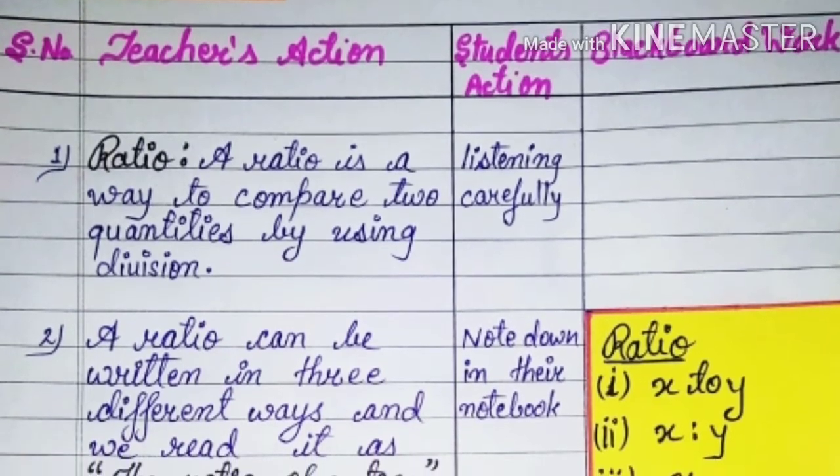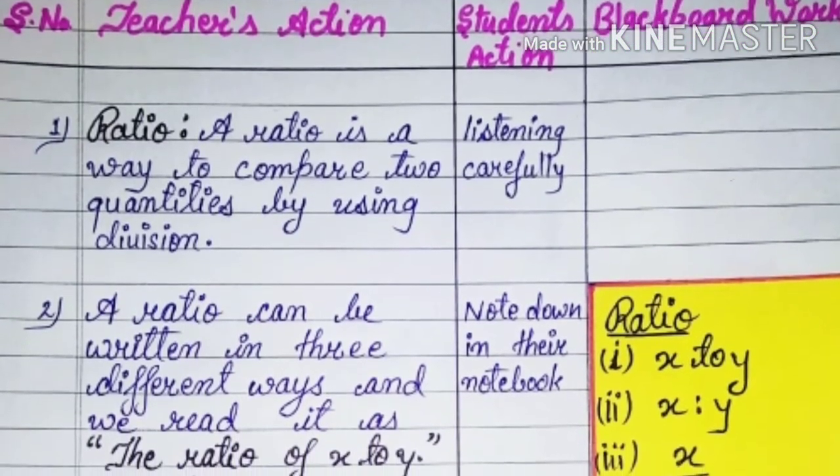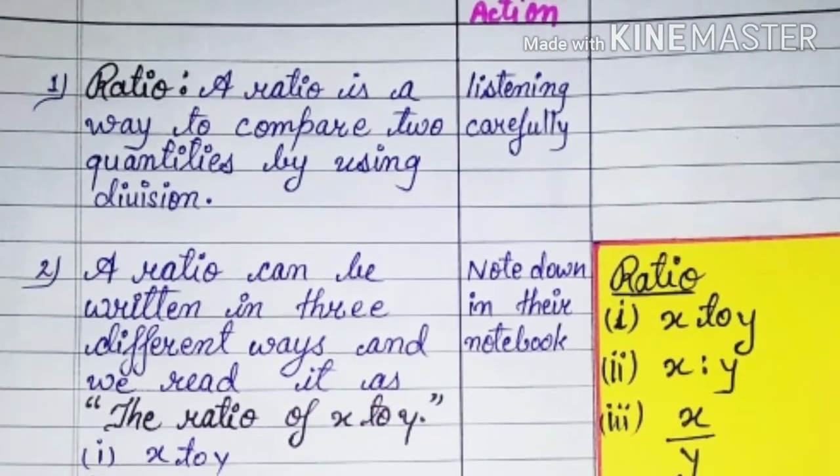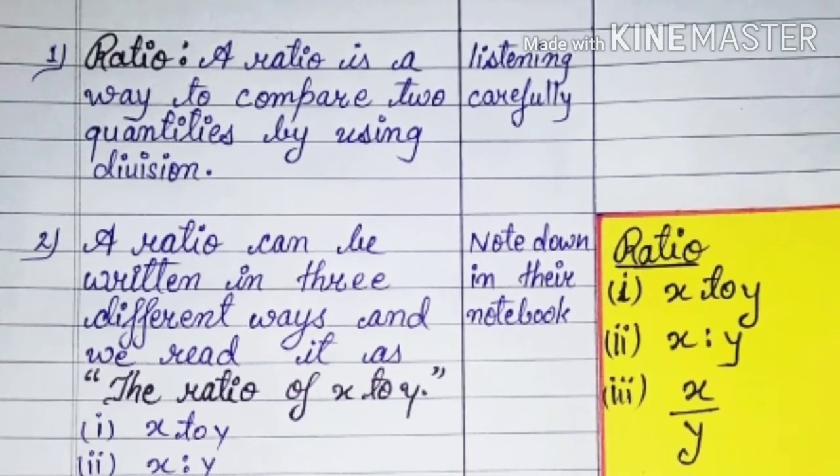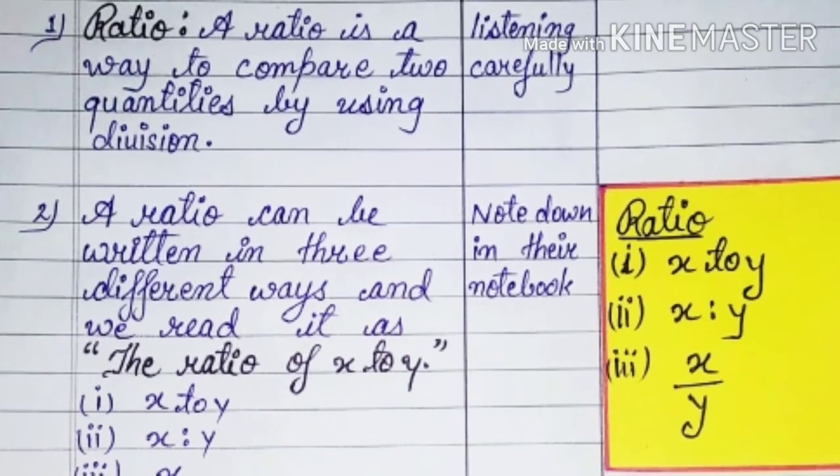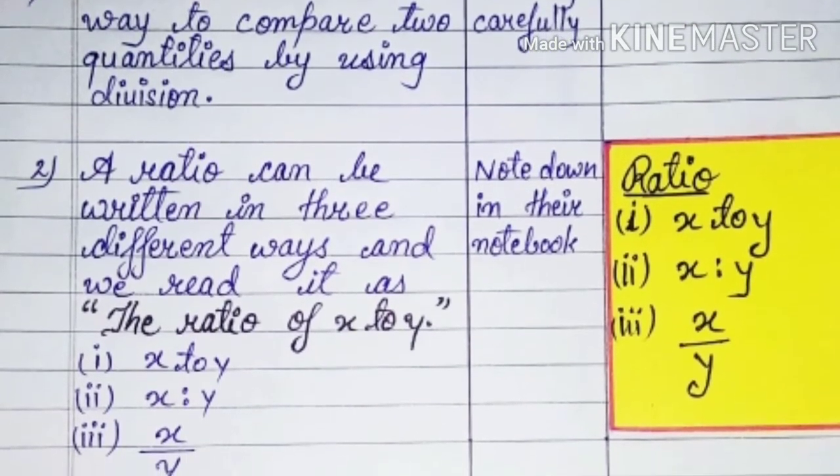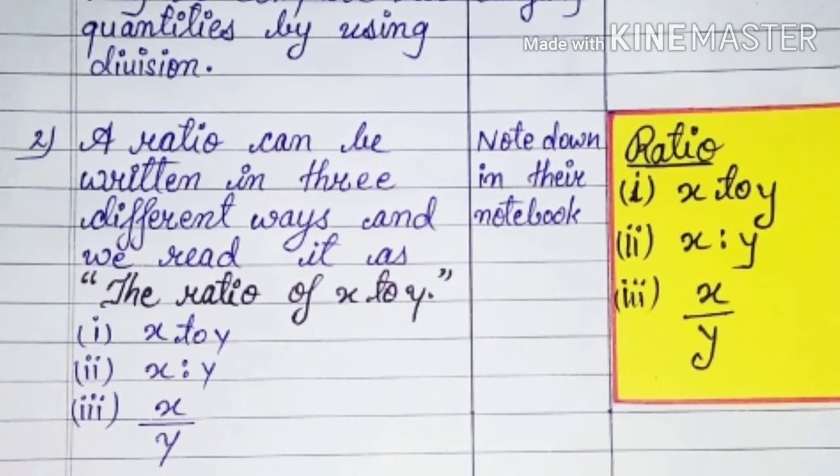What is ratio? It is defined. A ratio is a way to compare two quantities by using division. Then, how can we write the ratio? Which way to write it? We have told you that we can write the ratio in three types.